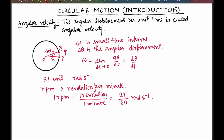The dimension of angular velocity, omega, is the dimension of angular displacement by the dimension of time. We know that the dimension of angular displacement is 1, that is a dimensionless quantity, and time is T. So the dimension of omega is T to the power minus 1.